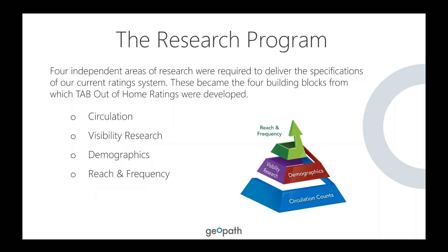We start the research program for Out-of-Home ratings with our circulation counts — that's the base we're building on. It's one of the things that allows us to have scope, granularity, and standardization of ratings, since we're starting with a measure we've been perfecting since basically 1933, when this organization began. But measuring an audience is not the same thing as measuring a volume of people passing on segments of road, which is what DEC was.